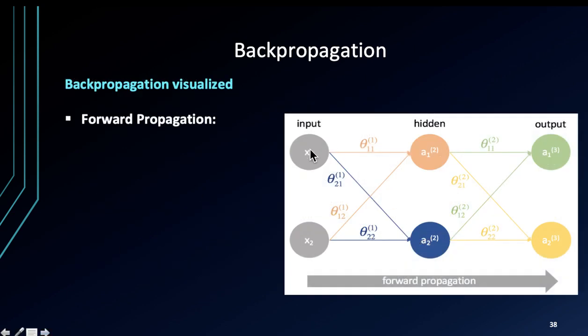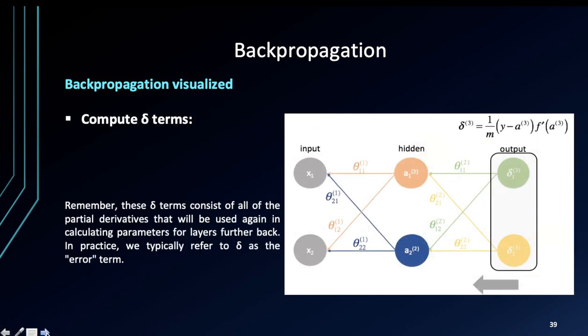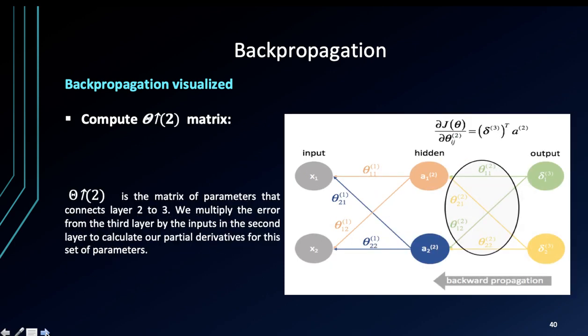This is forward propagation, and that's something that is quite intuitive and you're already aware of this. Then we compute the theta terms like so, and this term consists of all the partial derivatives that will be used again in calculating the parameters of layers further back. This is the error term. Then we compute the matrix, and this is the matrix of parameters which connects layer 2 to layer 3.